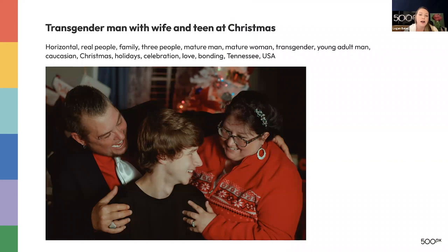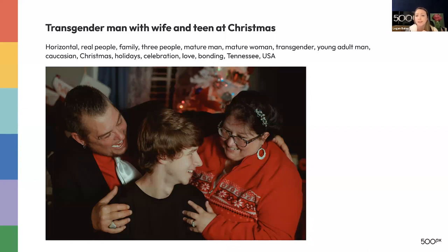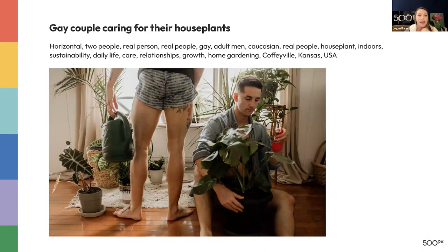Here we have some examples of how to title and keyword a photo. This photo was by Caitlin Sawyer — she photographed a beautiful family at Christmas, titled as 'Transgender man with wife and teen at Christmas.' Keywords include literal ones such as horizontal, family, three people, mature man, mature woman, transgender — and then more conceptual ones like celebration, love, bonding. Conceptual keywords allow people to resonate with the actions happening in the content. It's good to have a balance of both conceptual and literal keywords. Another example: a gay couple caring for their house plants — keywords include horizontal, two people, gay adult men, Caucasian for literal, and then things like growth, home gardening, care, daily life, and the location.